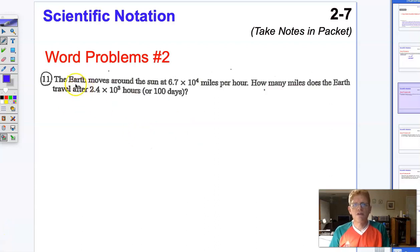In our second problem, we see that the Earth moves around the Sun at 6.7 × 10⁴ miles per hour. How many miles does the Earth travel after 2.4 × 10³ hours, or 100 days? So in this problem, it tells us how far it goes in one hour, and then we're supposed to multiply that by the number of hours to find out how far it travels in total. So that's multiplication.